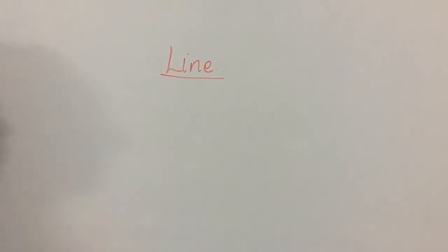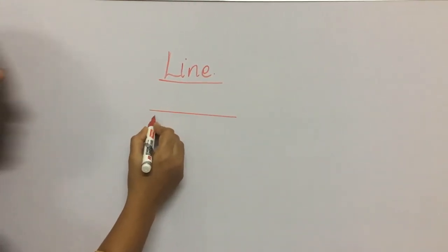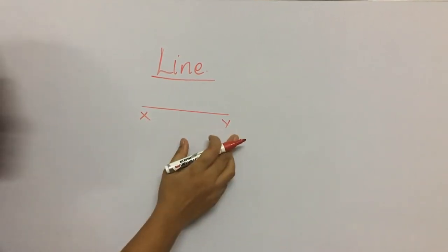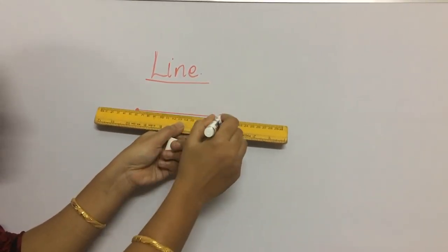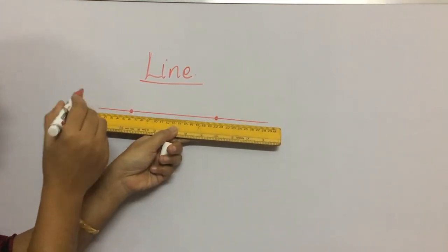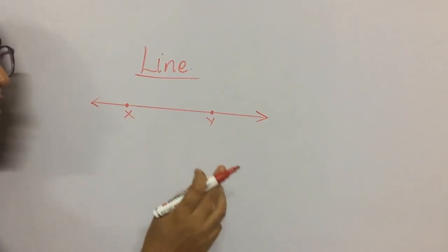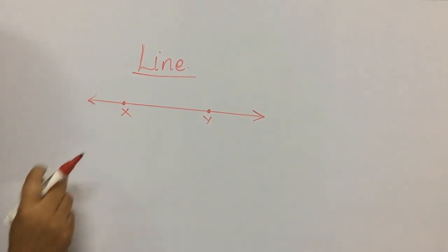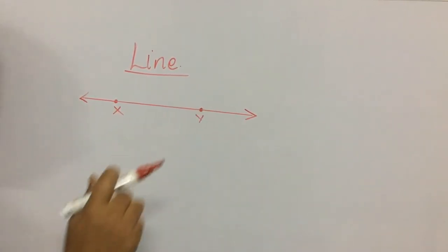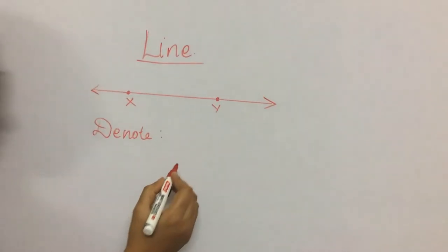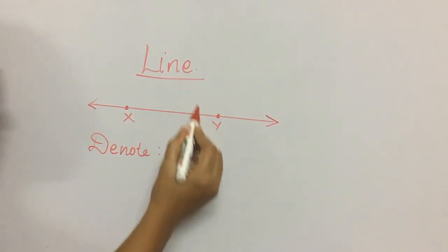Now let us learn about line, for which I am going to draw a line segment and name it XY. Can I extend this line segment? Yes, I can extend this. I am going to extend it on both sides. A line segment extended endlessly on both sides is called a line. A line has no end points; we cannot measure the length because it extends in both directions. We denote a line using two arrows — XY with two arrows on top. Two arrows means it is a line.